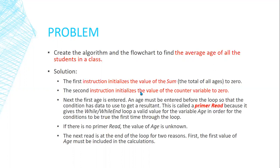Because we are counting, we will start our count from zero. For each student, we increment the count by one and add his age to the sum. Before we start our loop, we need a condition. This is why, before starting the loop, we enter the first student's age as a primary read, to use it as a condition. If there is no primary read — if we didn't read the age before the while loop — we don't know what the condition will be.